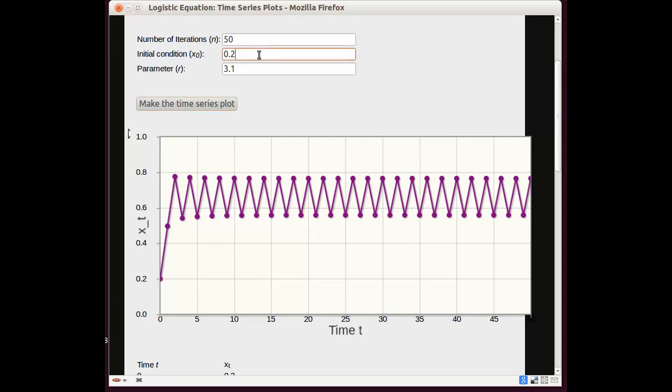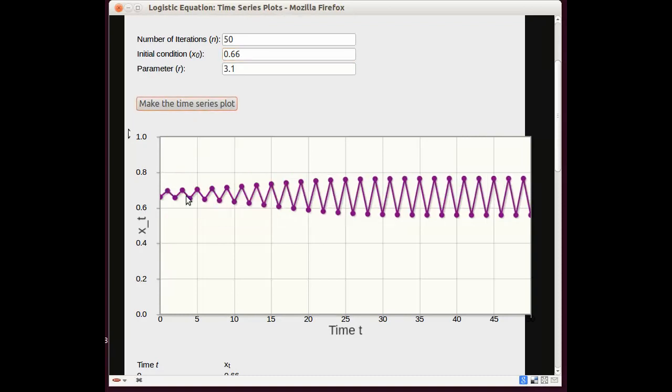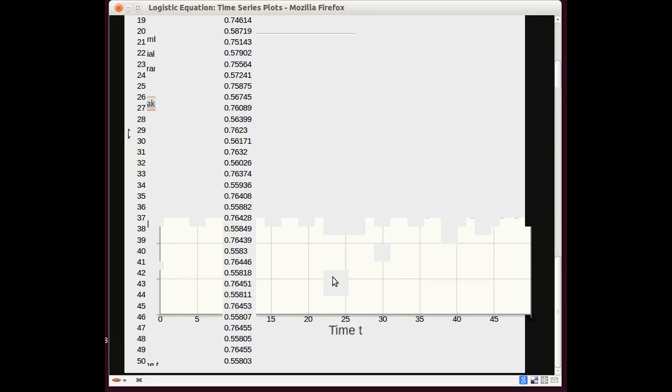Let's try something maybe in the middle of the cycle. Let's try 0.66 to see what happens then. Then instead of kind of wiggling from the out in, it wiggles from the in out. It starts wiggling and we end up in the same period 2. The numbers we see are the same numbers that we saw before.